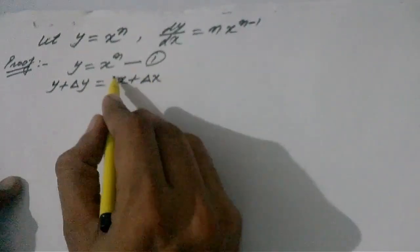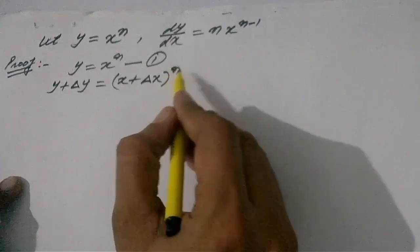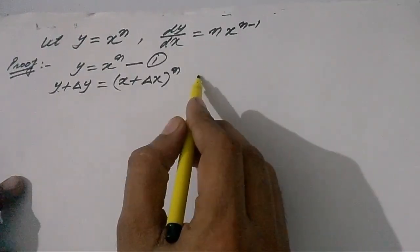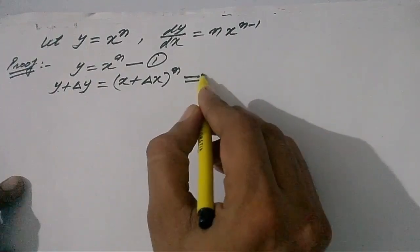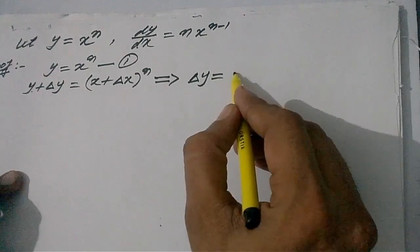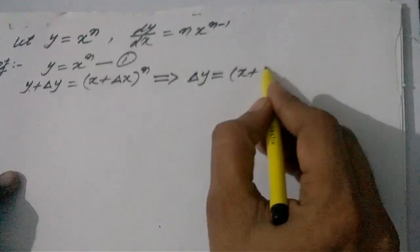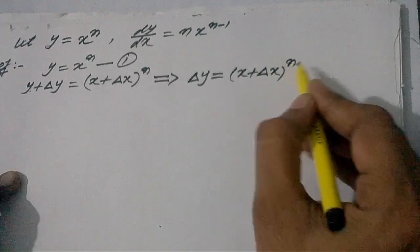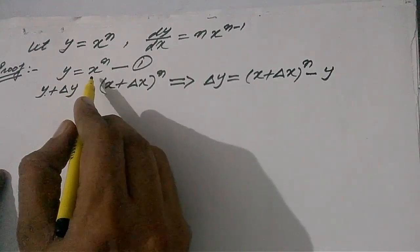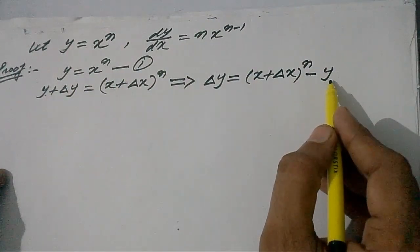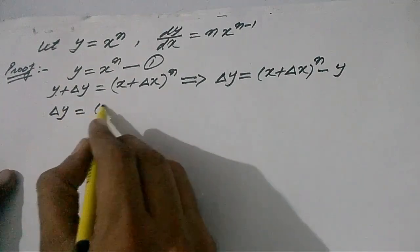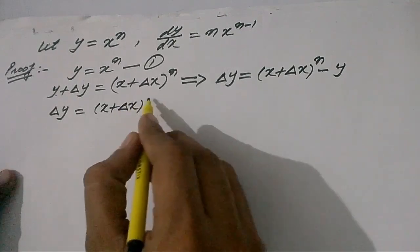So we may write y plus delta y is equal to x plus delta x whole to the power n. Transposing y to the left hand side, it implies that delta y is equal to x plus delta x raised to the power n minus y. And since from equation number one, y is equal to x to the power n, we may replace y by x to the power n.